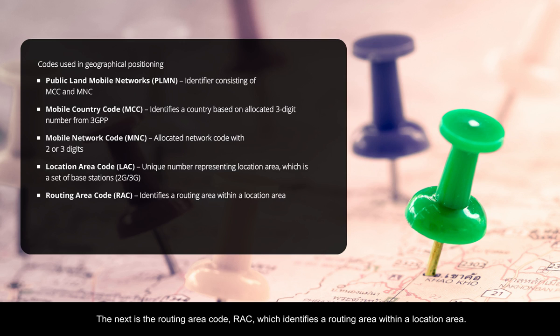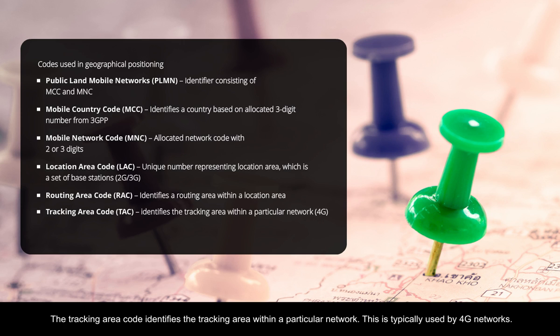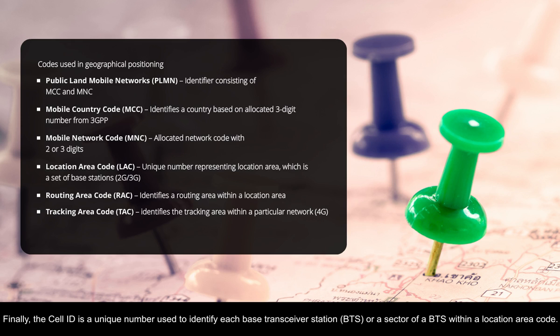The next is the routing area code, RAC, which identifies a routing area within a location area. The tracking area code identifies the tracking area within a particular network, and is typically used by 4G networks. Finally, the cell ID is a unique number used to identify each base transceiver station, BTS, or a sector of a BTS within a location area code.